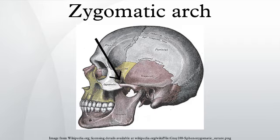The jugal point is the point at the anterior end of the upper border of the zygomatic arch where the masseteric and maxillary edges meet at an angle, where it meets the process of the zygomatic bone structure.